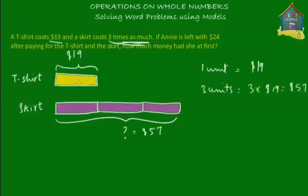If the t-shirt costs $19 and the skirt costs $57, how much did Annie spend? Annie spent $19 for the t-shirt plus $57 for the skirt. That's $19 + $57 = $76. So she spent altogether $76.